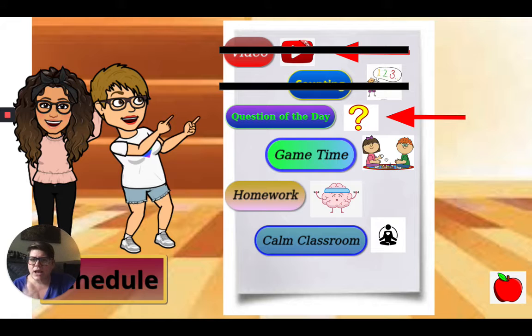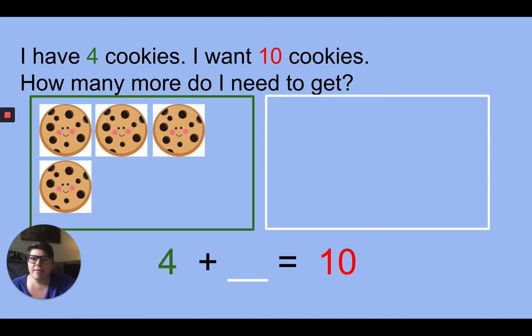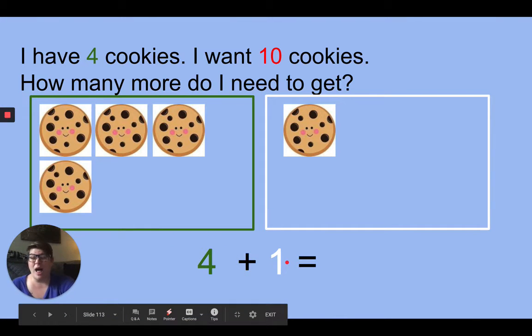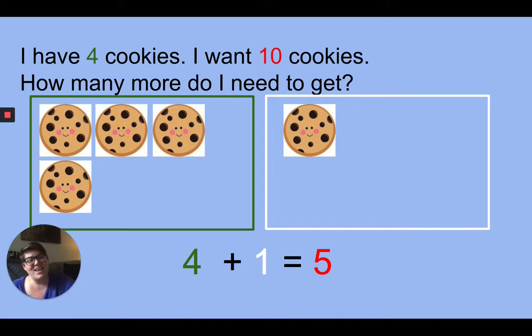Next we looked at our question of the day. If I have 4 cookies and I want 10 cookies, how many more cookies do I need to get? Let's find out. Does 4 plus 1 give me enough cookies? No. 4 plus 1 equals 5 and I want 10.